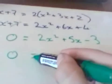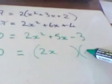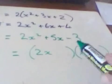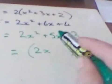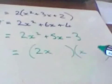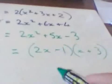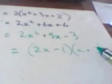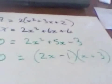This will factorize now to give 2x in one bracket, x in the other. We're looking for two numbers that multiply to give -3, that's going to be 3 and 1. But we want 5x altogether, so we're going to have +3 here and -1 there, because 2x times 3 is 6x, take away the 1x gives 5x.